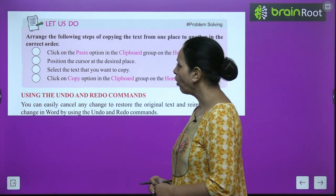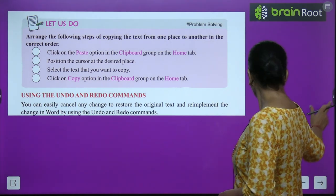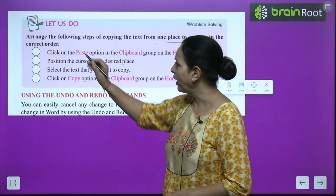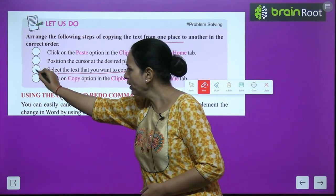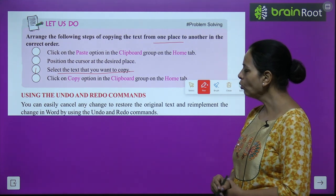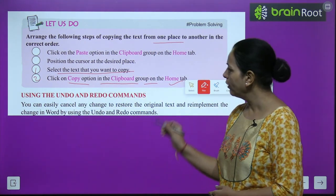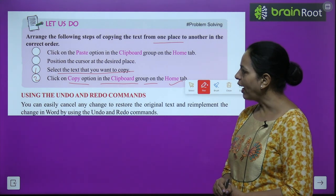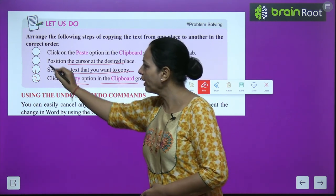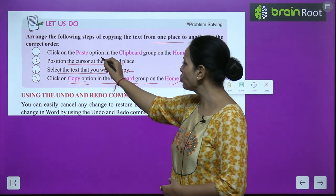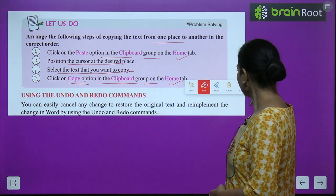Let us arrange the steps for copying text in correct order. First step: select the text you want to copy. Second step: click on Copy option in the Clipboard group on the Home tab. Third step: position the cursor at the desired place. Fourth step: click on the Paste option in the Clipboard group on the Home tab.